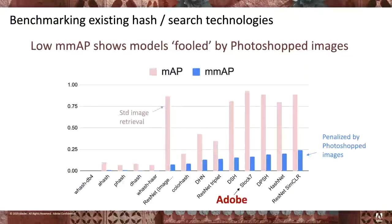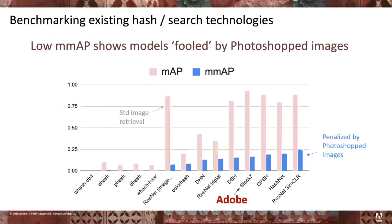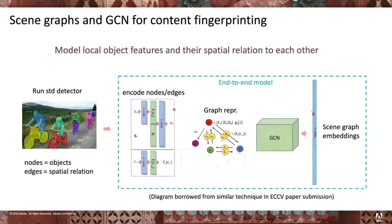To visualize the benchmark results: many of the deep models do well on standard image retrieval, but when it comes to not being fooled by Photoshop images, the metrics drop pretty dramatically. That's exactly what this project wants to address — closing that gap by increasing the Masked MAP score so the system isn't fooled by manipulated images during retrieval. To achieve this, we're pursuing scene graphs and graph convolutional networks.